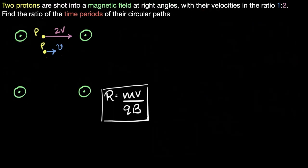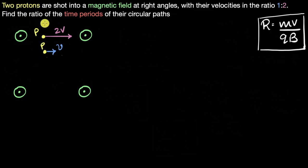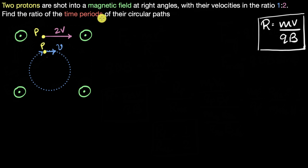Let's solve one more example using that radius equation. This time we have two protons shot into the magnetic field at right angles, with their velocities in the ratio 1 to 2. Both are protons but their velocities are different. Find the ratio of the time periods of their circular paths. We already know these particles go in circular paths. We need to find the expression for the time it takes to complete one full circle. Let's derive it from first principles.